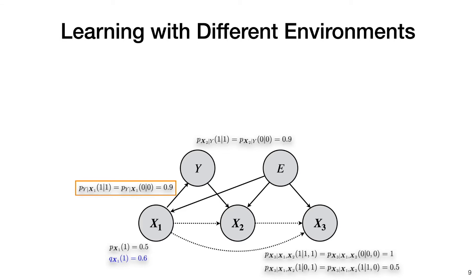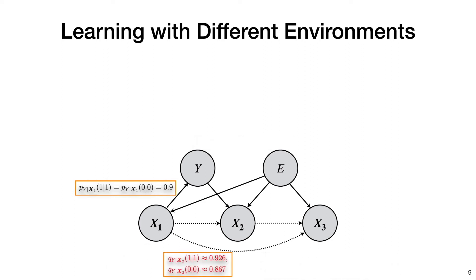Here we denote the distribution under environment 2 as q rather than p. Then it turns out that this small change suffices to expose x2 and x3. In particular, in environment 2, it can be computed that q of y given x2 is no longer 0.9 when they take the same value, as is the case in environment 1.